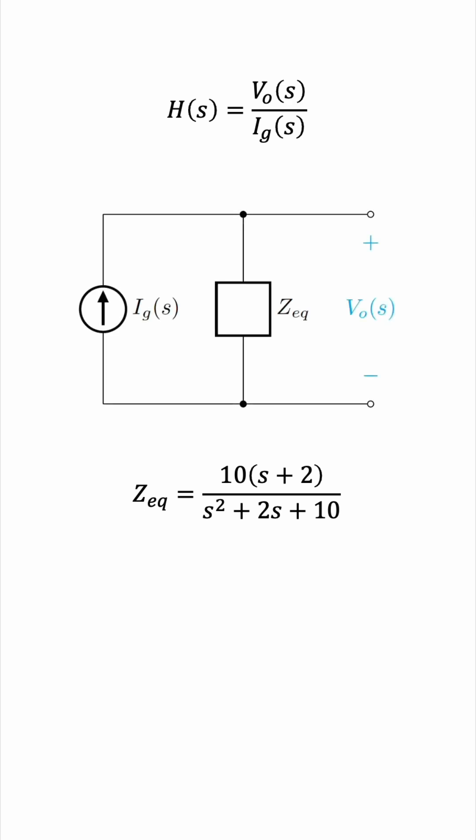Now, using Ohm's law, the output voltage, VO of S, is the product of the current and impedance. Substituting the impedance, we can now solve for the transfer function by dividing by IG of S.